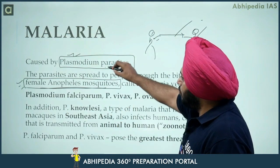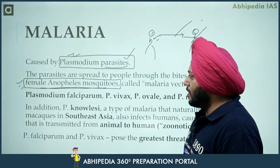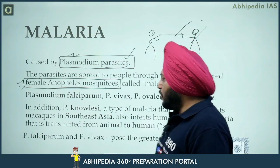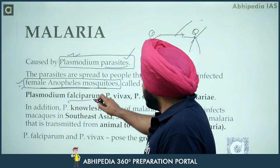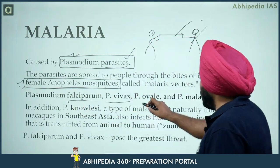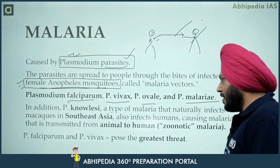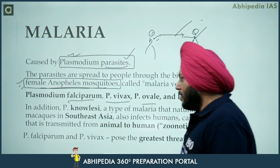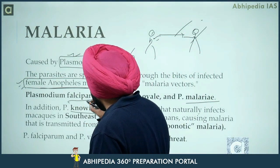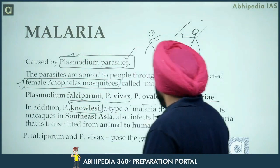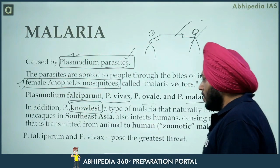Malaria is mostly caused by plasmodium parasites. The types of plasmodium parasites are: Plasmodium falciparum, vivax, ovale, and malariae. These are the main ones. There is also another novel type which also infects humans.